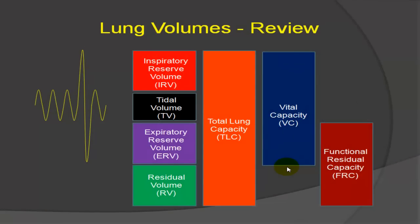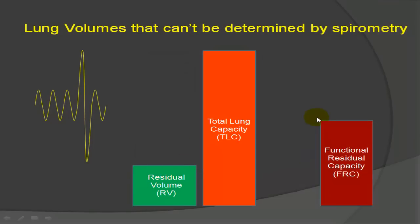To review from the first lecture, we defined lung volumes as mutually exclusive volumes that stack up to form total lung capacity, but we never talked about how we could measure residual volume or any of the lung volumes or capacities that include the residual volume, which I'm going to highlight right here. We have a residual volume which cannot be measured spirometrically. Total lung capacity cannot be measured spirometrically because we don't know what's down here, and the functional residual capacity cannot be measured spirometrically. So what are we to do?